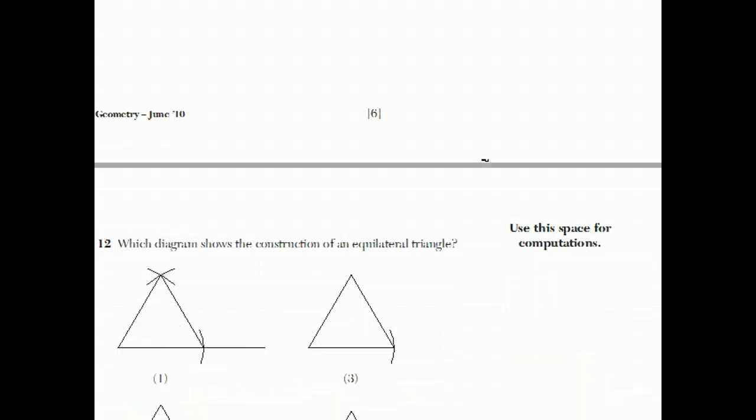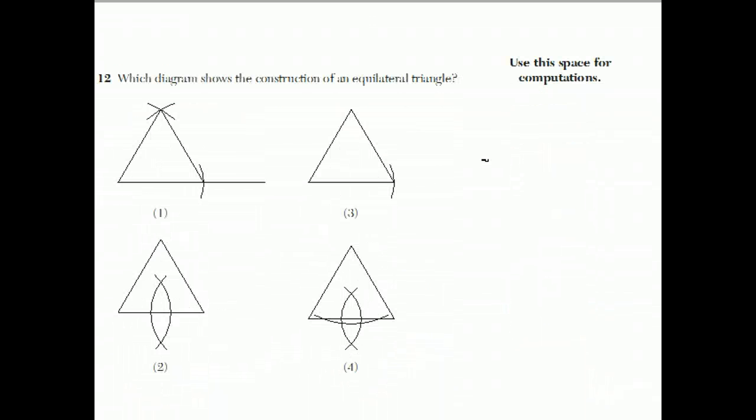Which diagram shows the construction of an equilateral triangle? Well, this is actually a pretty involved question. If you have a compass and a straight edge, you can create an equilateral triangle like this. You start by just making a line segment, or you're given a line segment.